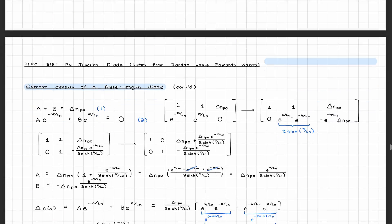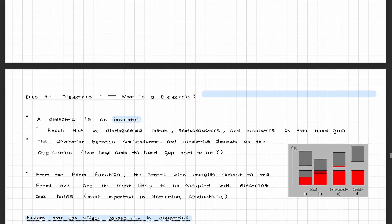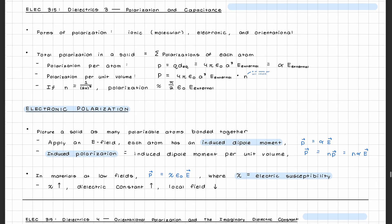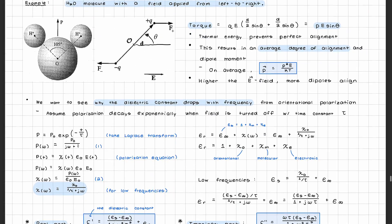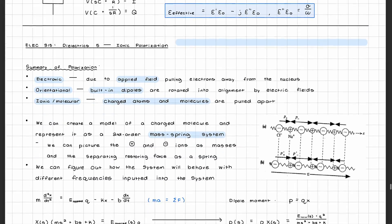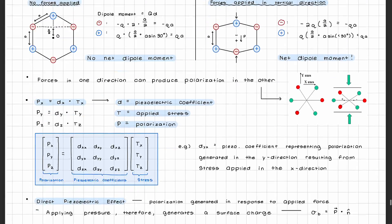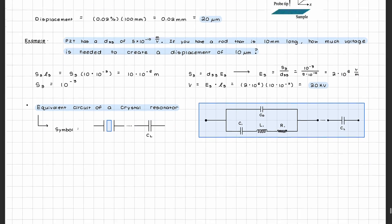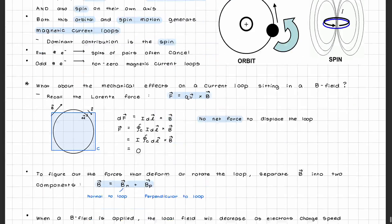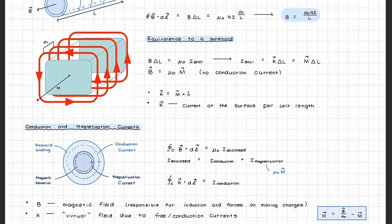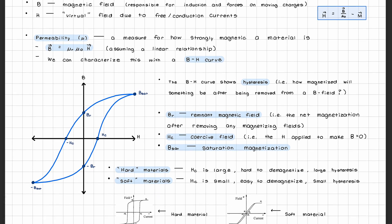After semiconductors was dielectrics, first covering what a dielectric was before moving on to finding out where the dielectric constant comes from. Different forms of polarization, such as electronic polarization, orientational polarization, and ionic polarization, and dielectric breakdown. The last unit covered piezoelectrics and magnetic materials, starting off with what piezoelectricity is and the piezoelectric effect, before going over different sources of magnetism, what diamagnetism is and the properties of diamagnetic materials, magnetic torque and moments of magnetic materials, and permeability. And that's about everything that you're gonna learn in ELEC 315.